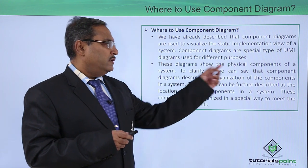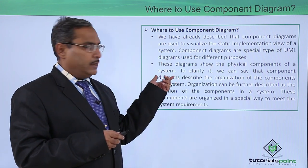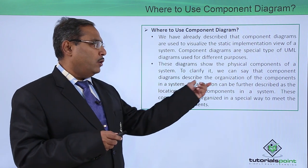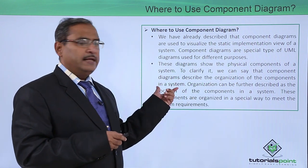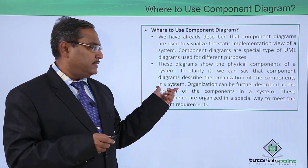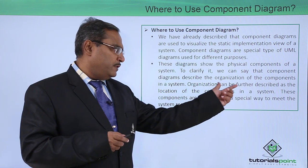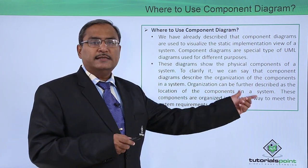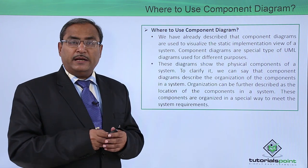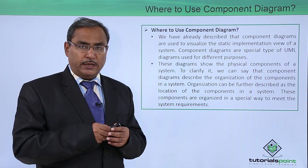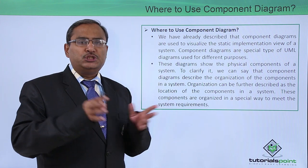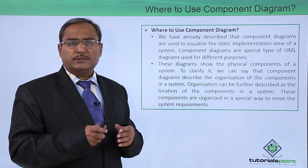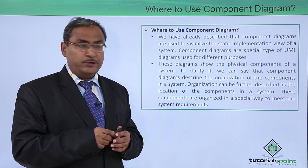These diagrams show the physical components of a system. Component diagrams describe the organization of the components in a system — that is, the location of the components. All these components may not reside on the same machine; they may also be distributed, spread across multiple computers connected by a computer communication network.